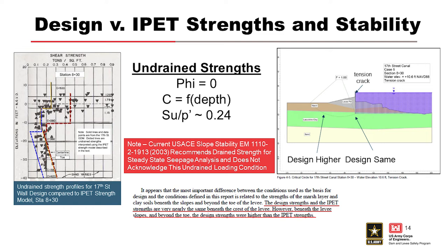On the plot, there's an orange line, a red line, and a blue line. The red line represents strength values calculated by IPET modeling under the centerline, the blue is under the toe, and the orange represents the design values. The red dashed line shows the strength profile beneath the centerline based on IPET forensics matches pretty well with design at depth — the lines are very close — but at the toe there's quite a difference. The strength at the toe was quite a bit lower than estimated in design. That's why those I-walls didn't perform very well — they weren't designed to account for the real stress condition that the soils were experiencing.